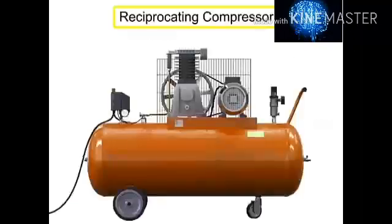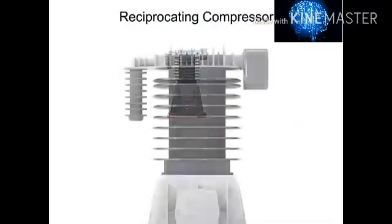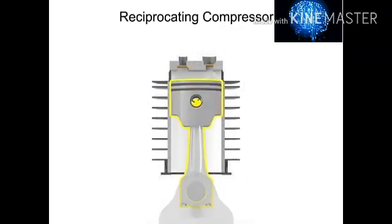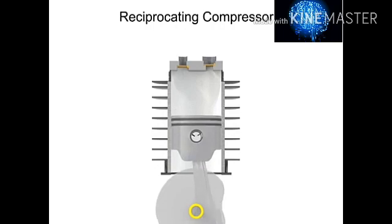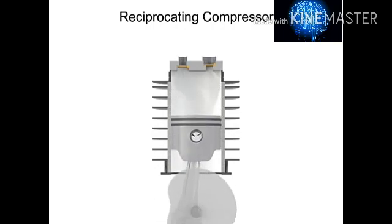A typical reciprocating compressor consists of a housing with an internal piston connected to a crankshaft. As the crankshaft turns, a piston reciprocates within the cylindrical housing.